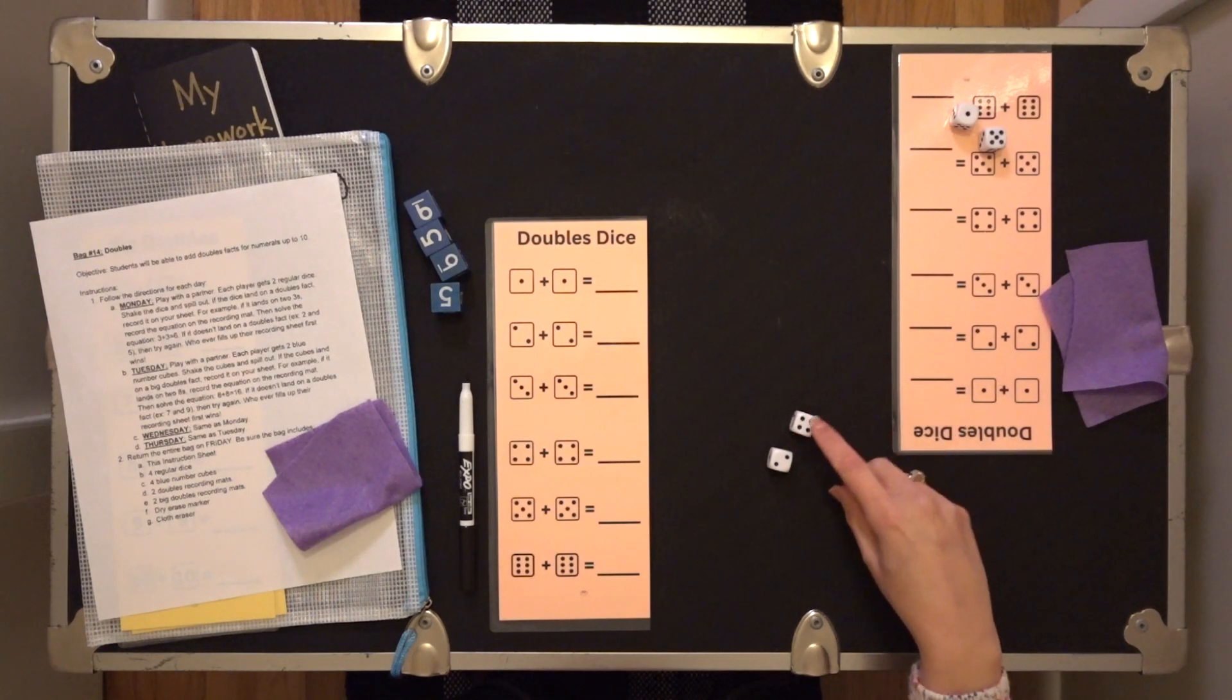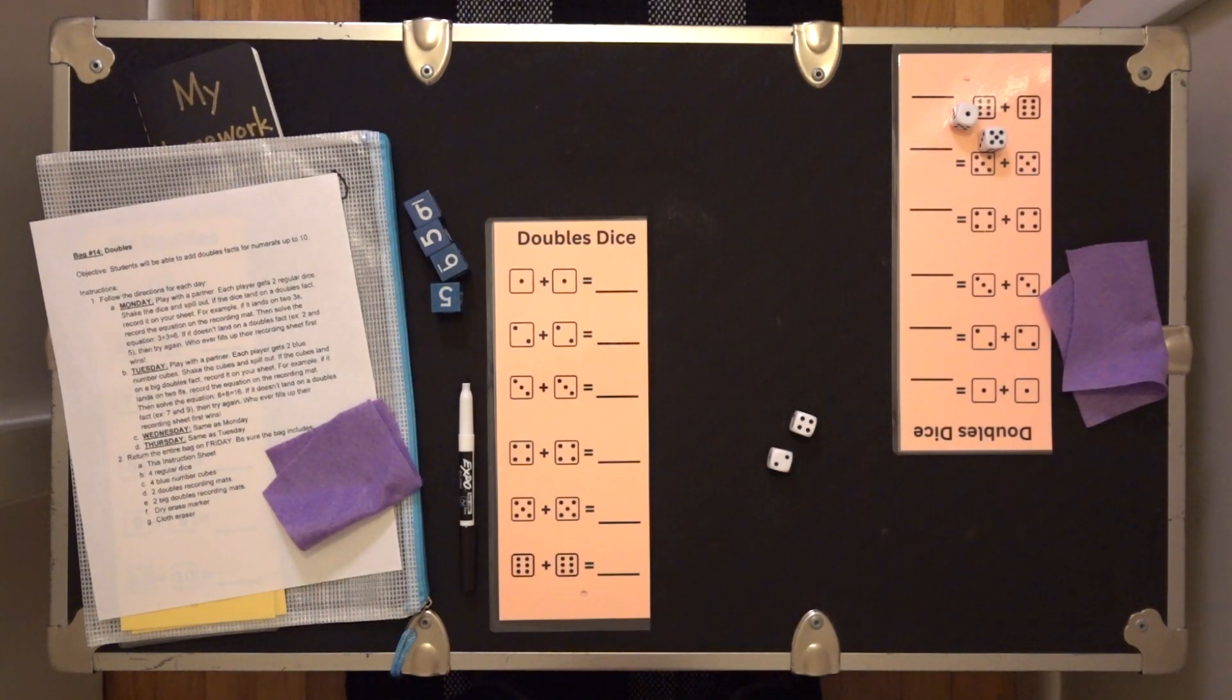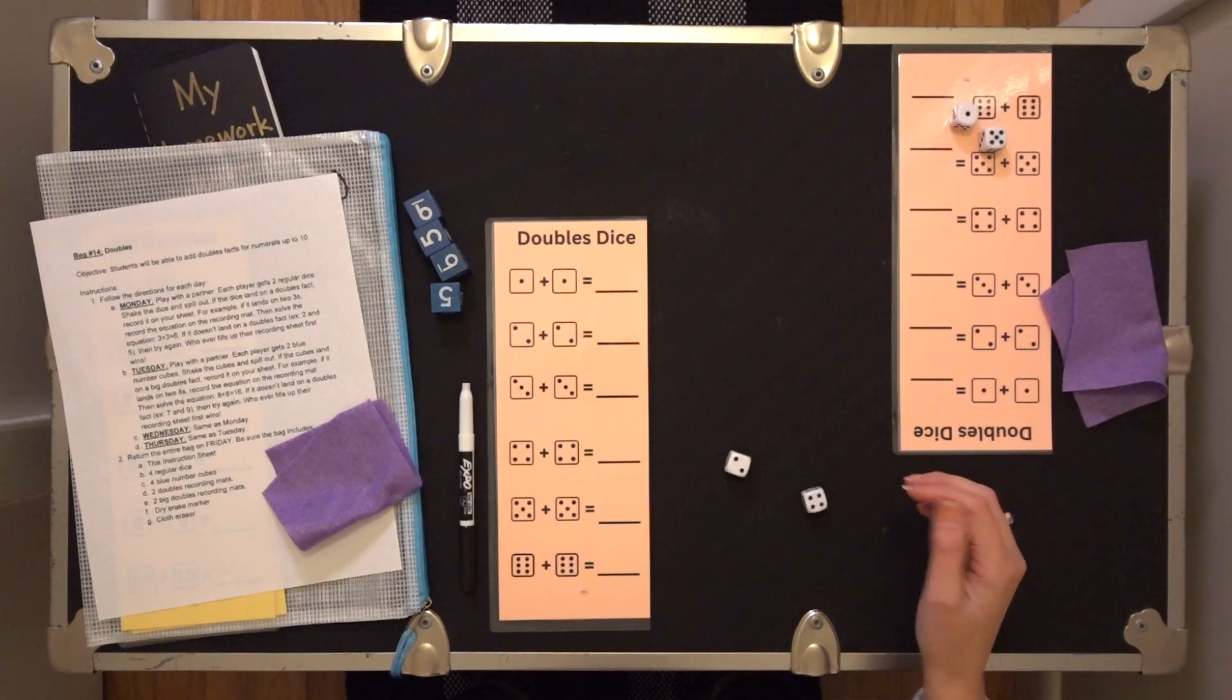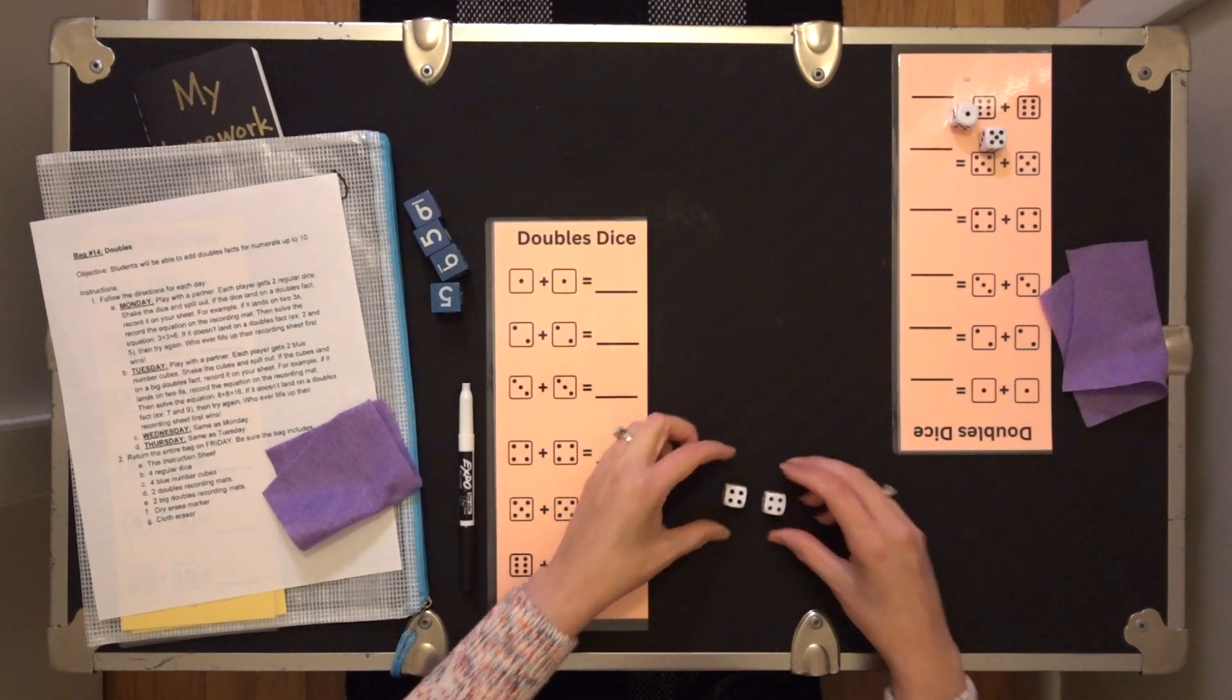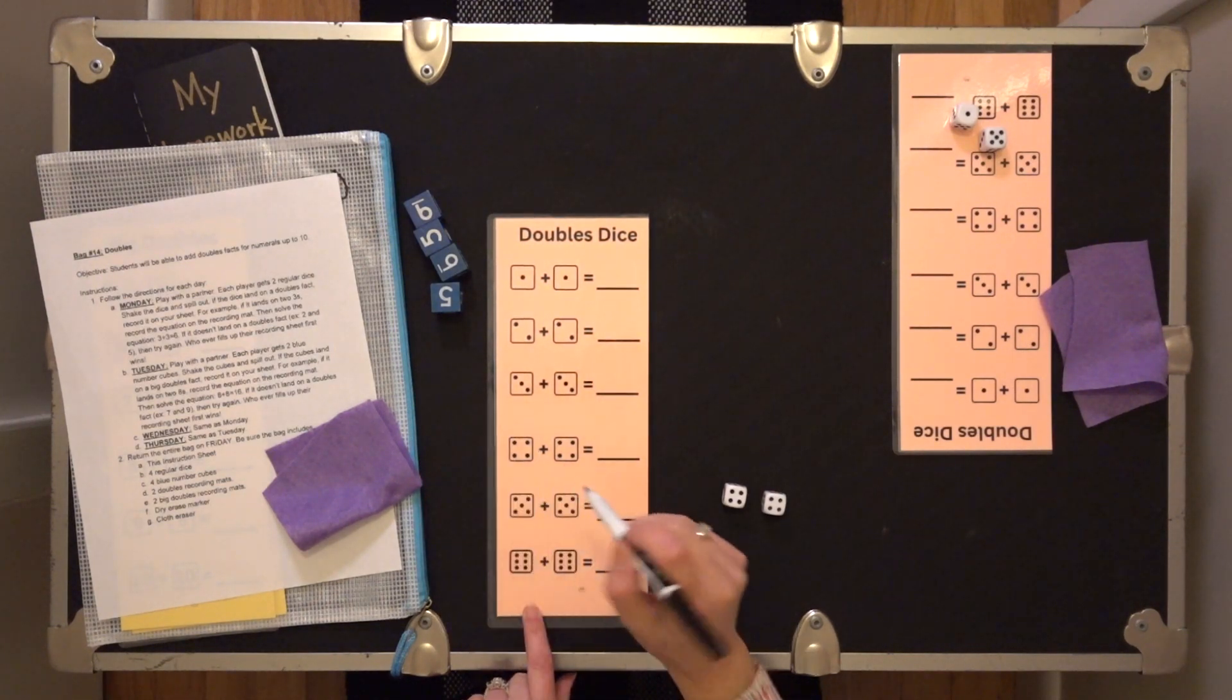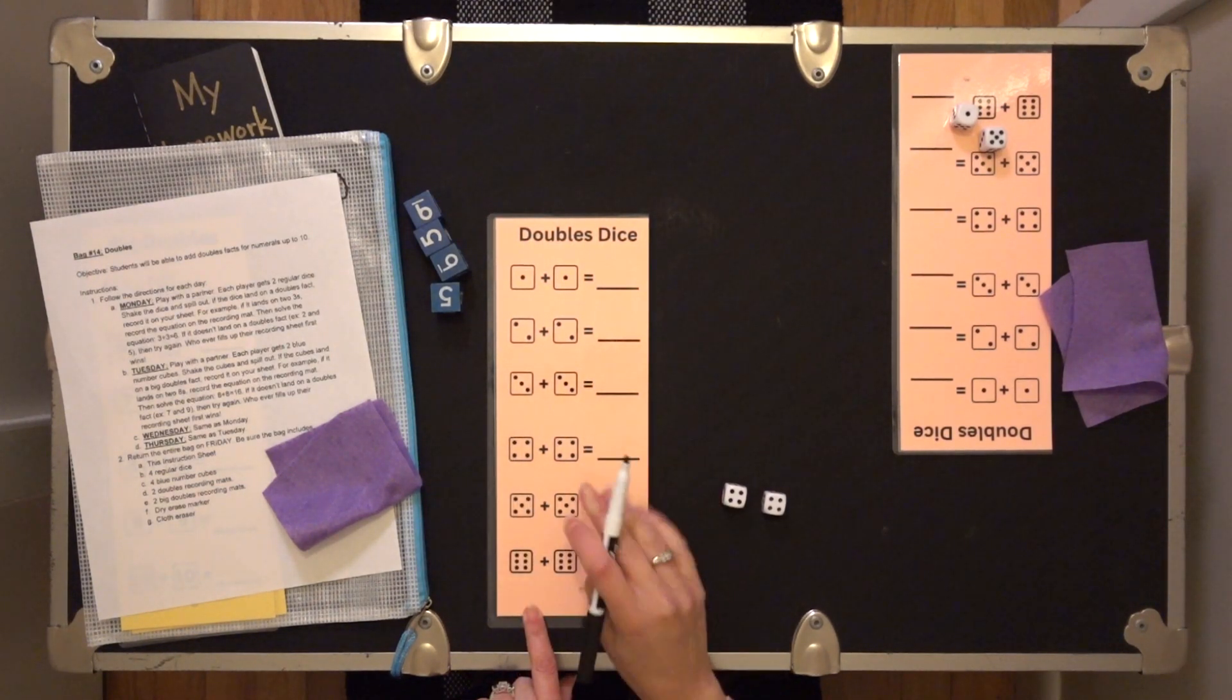And we're going to look at the top numbers, and we're going to see, does that make a doubles fact? Hmm. This is a four and a two, not a doubles fact. So then I would have to try again. But if I get a doubles fact, okay, I'm going to pretend. There we go. Four and four. If I had a four and a four, I would then solve eight and record.